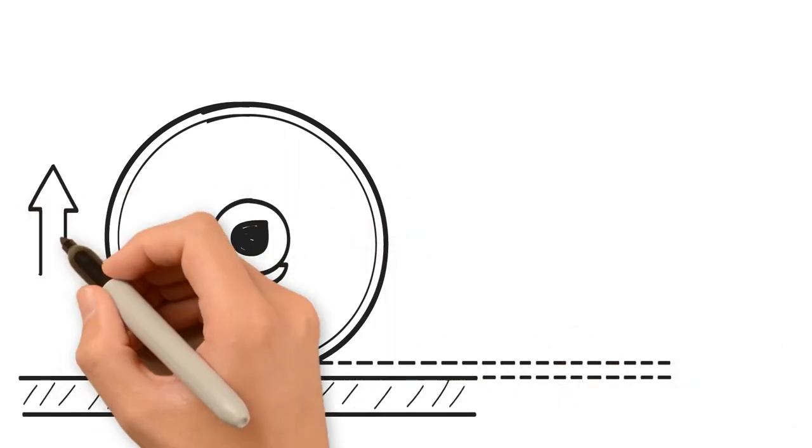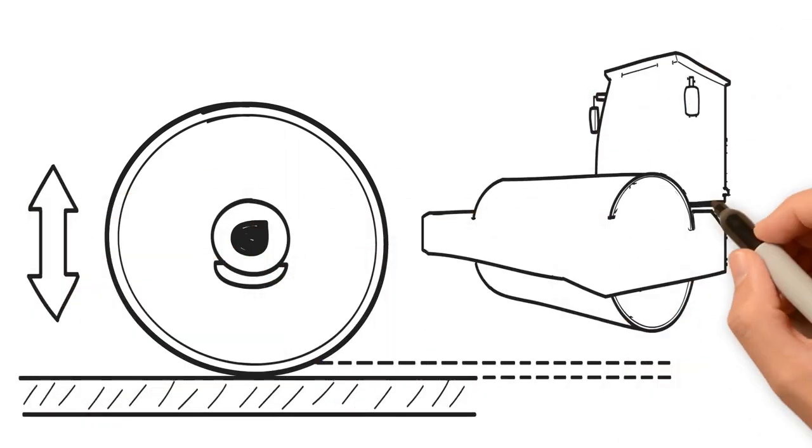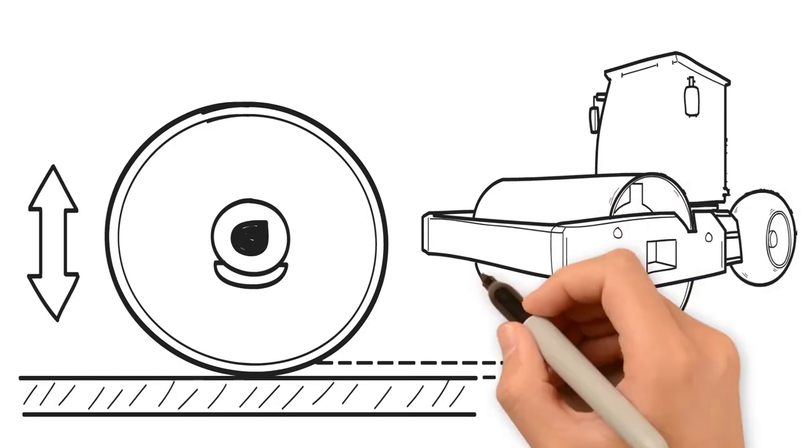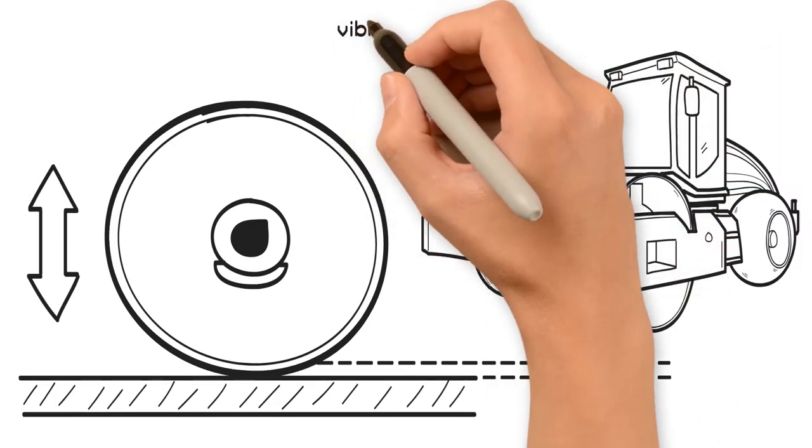The other aspect of vibratory force is frequency. Frequency is defined as the number of times that the drum hits the mat and is rated in vibrations per second.